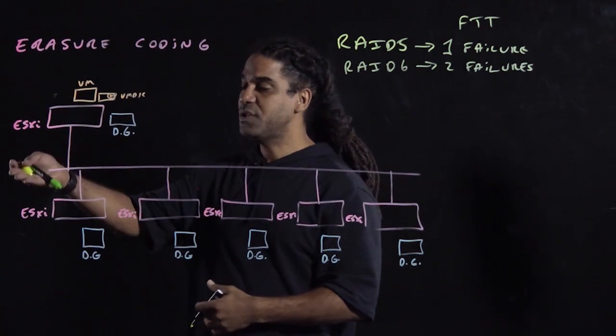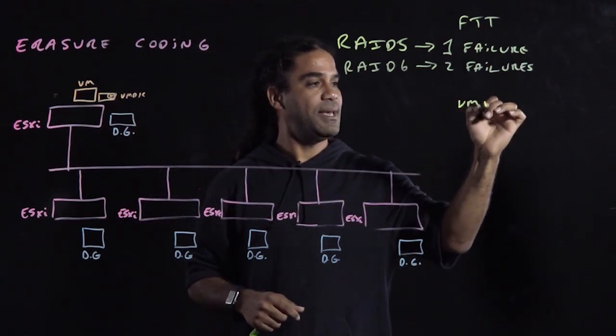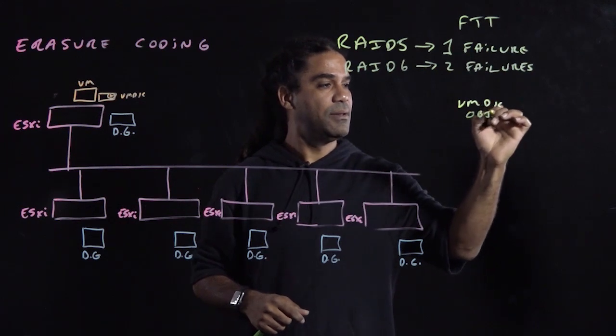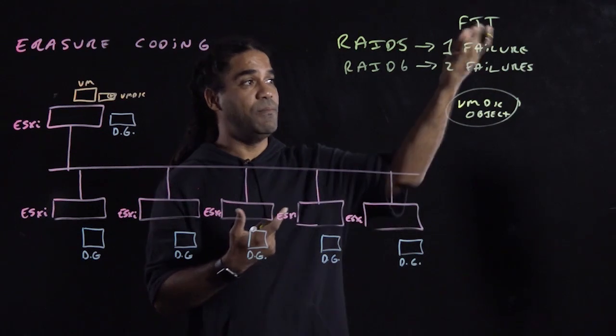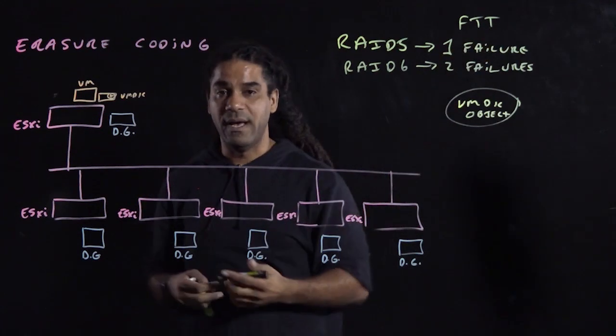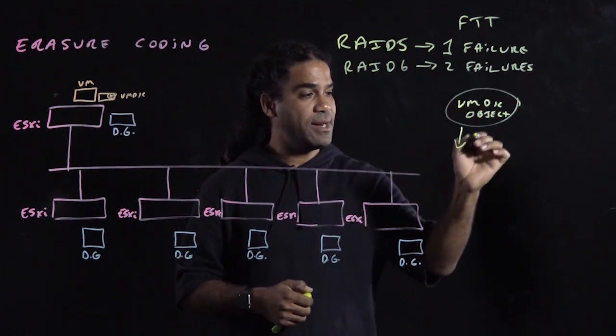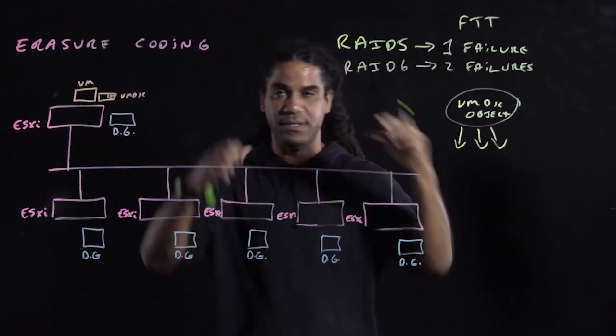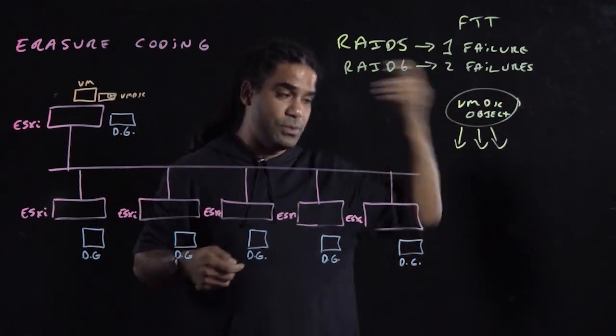So let's pretend we have our virtual machine, and for the VMDK object, we want to provide an SPVM of 1, FTT of 1, with a RAID 5. So what this thing will do is that it will take that object and it will break it up into three different components. So think of the hard drive, break it up, and you have 1, 2, 3.